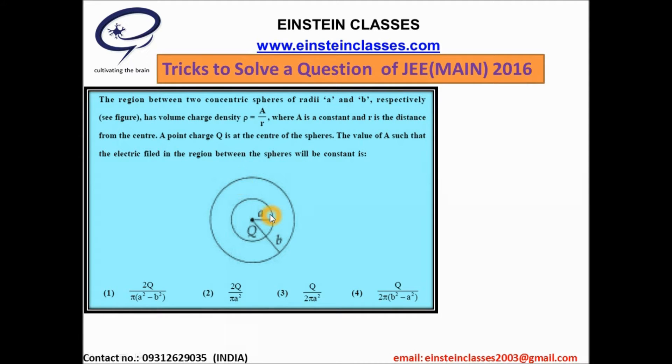There are two concentric spheres and a point charge Q is placed at the center of the sphere. Between these two spheres there is a certain volume charge distribution and the volume charge distribution is given by rho equal to a by r.